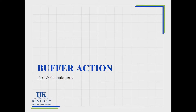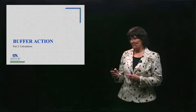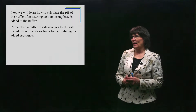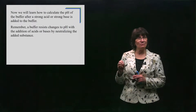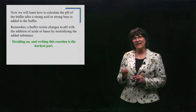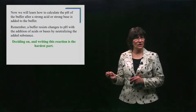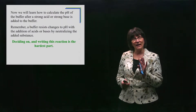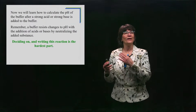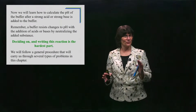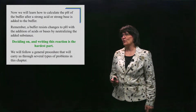Now we're going to do the calculations of buffers resisting change to pH — the action of buffers working with their calculations. A buffer resists change to pH upon the addition of acids and bases by neutralizing them. The key to doing this reaction is to find that neutralization reaction. Deciding on that first reaction is the most challenging part of these calculations, and we have to know and understand the process in order to find the reaction. We're going to follow a general procedure.